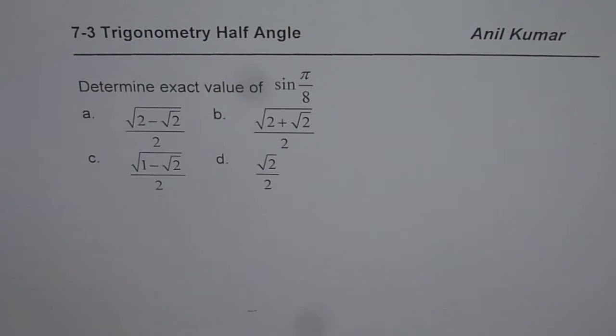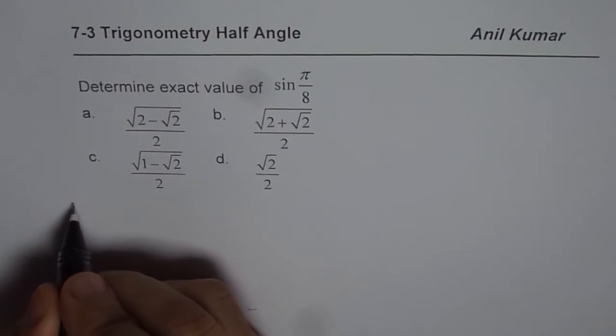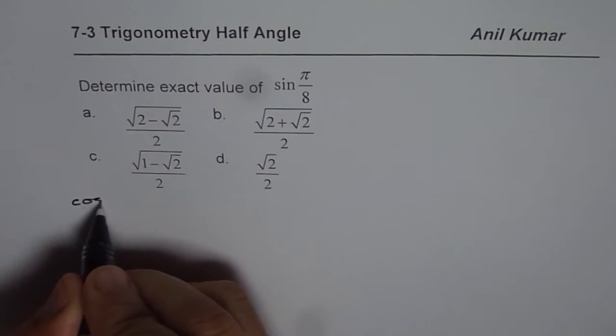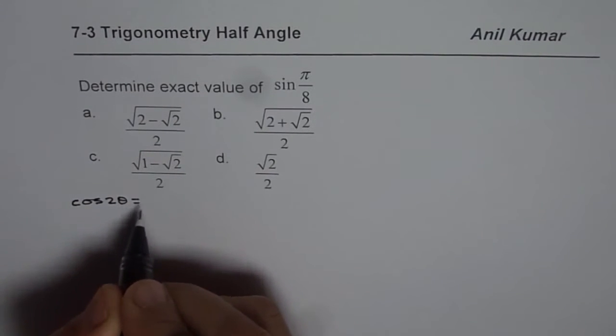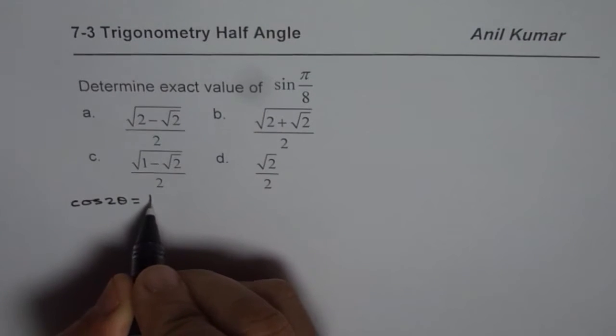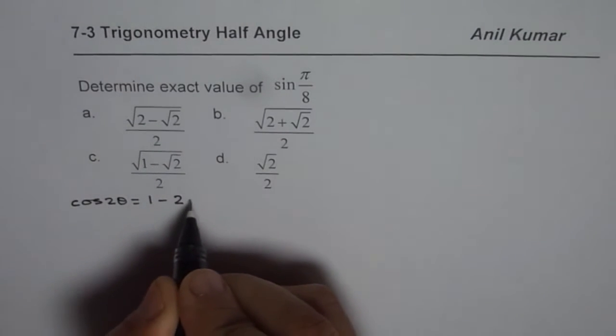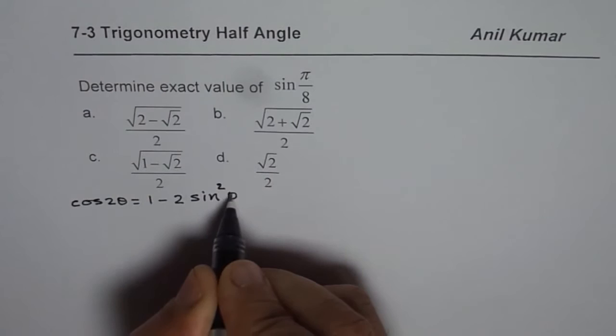Let us actually find the exact value. We can derive the formula. We know what cos 2 theta equals to. Let us say cos 2 theta equals to, we want sine, so we will write in terms of sine, 1 minus 2 sine square theta.